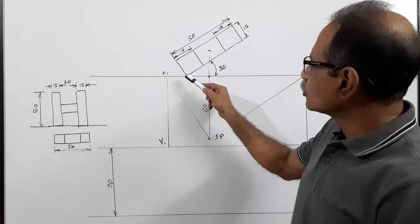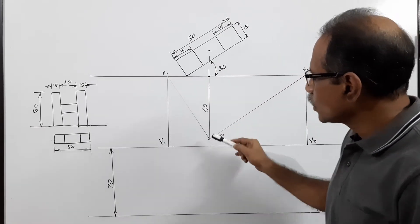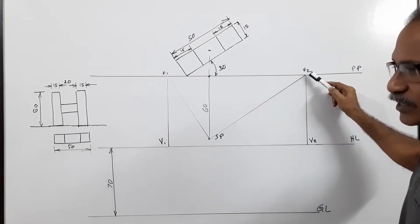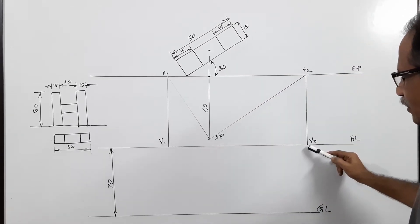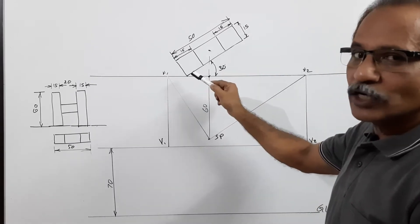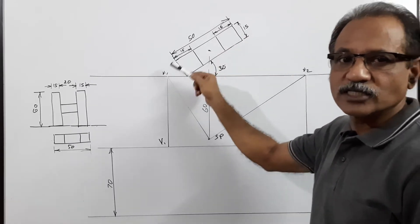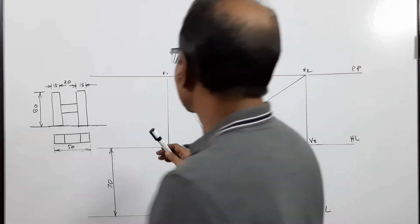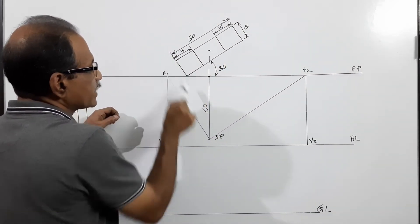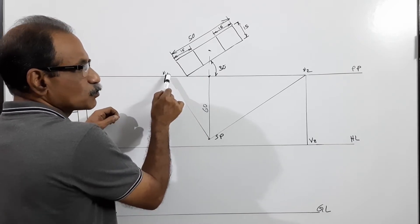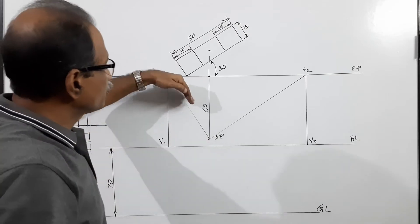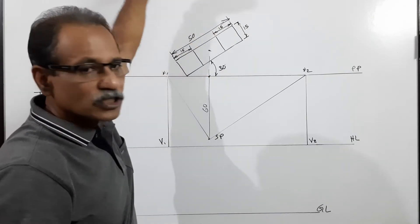Then we are going to draw this by the vanishing point method. To find vanishing point V2, draw a line through SP parallel to that side, cut the picture plane at v2, and drop it down to HL — I get capital V2. Similarly, draw through SP a line parallel to the other side, cut the picture plane at v1, drop it down to HL to get capital V1. V1 and V2 are the vanishing points of the respective sides.